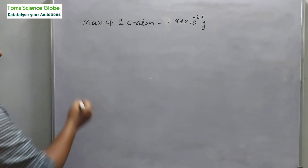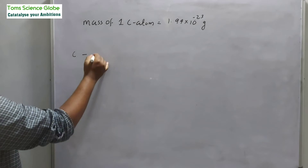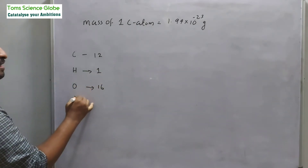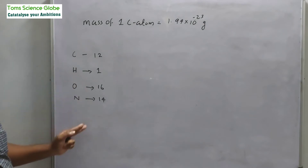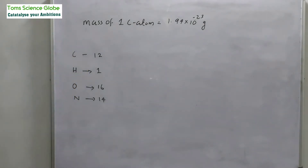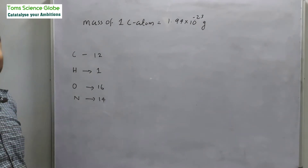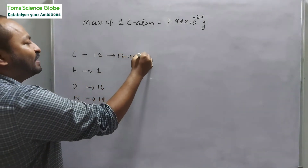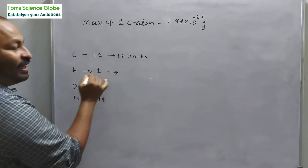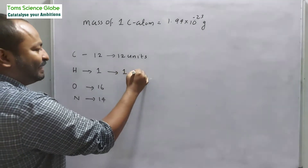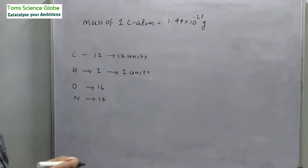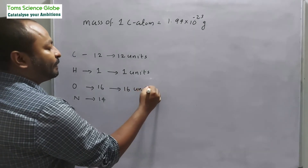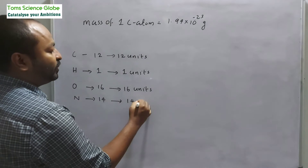For each element we have atomic masses. Hydrogen is 1 unit, oxygen is 16 units, and nitrogen is 14 units. Carbon contains 12 units. Atomic mass corresponds to the atomic mass unit.